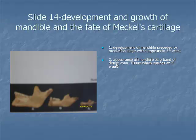During the seventh week of intrauterine life, a center of ossification appears at a site corresponding to the future mental foramen. That is why the mandible is said to develop by intramembranous ossification. From this center, bone formation spreads rapidly forward, backward, and upward around the inferior alveolar nerve and its terminal branches.